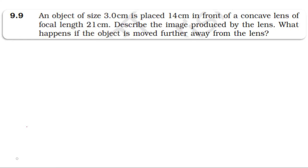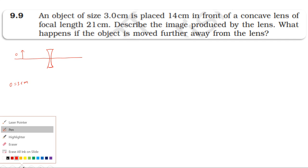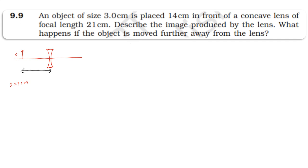Looking at the diagram, the principal axis is shown. Object size is 3 centimeters. Object distance is measured from the optical center, measured in the opposite direction from incident. Using the lens formula: 1/f = 1/v minus 1/u. For a concave lens, focal length f is minus 21 cm.